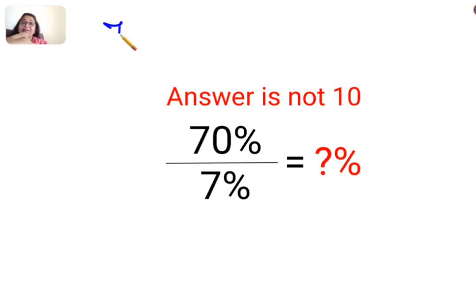See, understand when you have a percent sign, you can convert it into a fraction by writing it as what? 70 upon 100 divided by we have 7% which is again 7 upon 100.